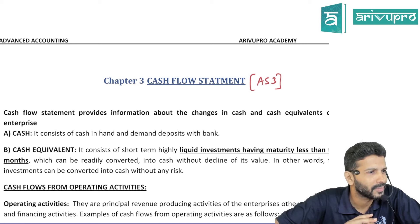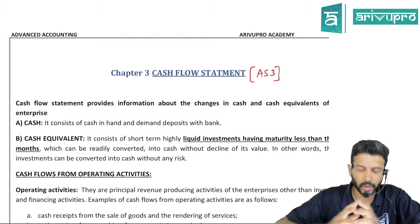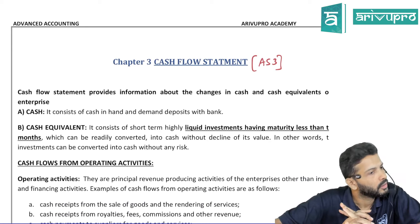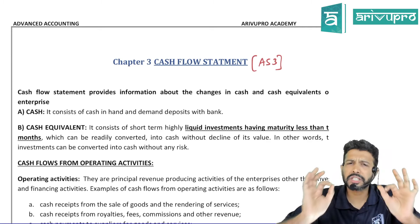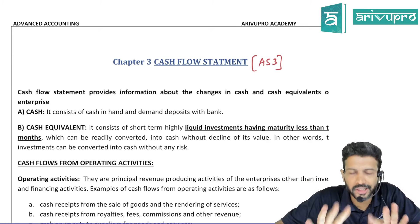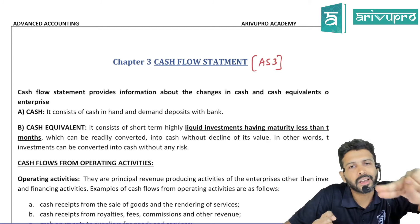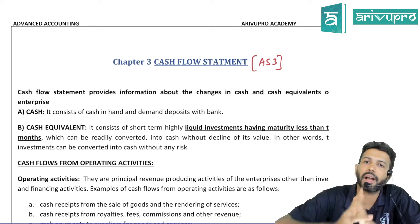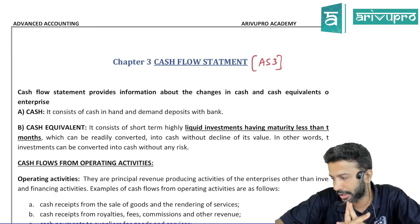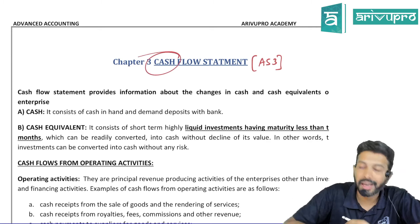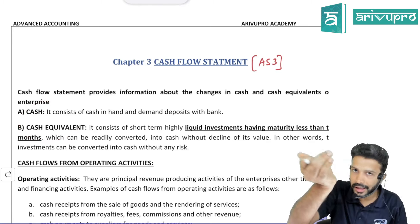What does Cash Flow Statement mean? It's simply a statement — not a ledger account — which captures two pieces of information: cash coming in to the organization and cash going out of the organization. That's all. This inflow and outflow of cash is put on a particular statement, which is called the Cash Flow Statement. Don't be misled by the term 'cash' — here it means cash and cash equivalents.